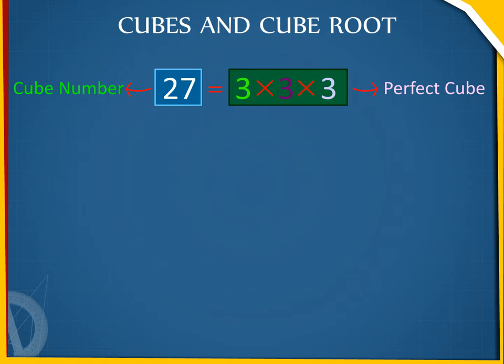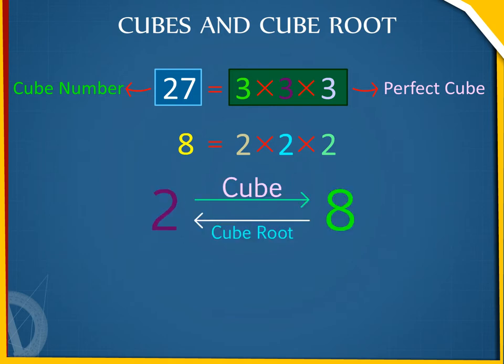As 8 is the cube of 2, 2 is the cube root of 8. We write: 2³ = 8, and ∛8 = 2.